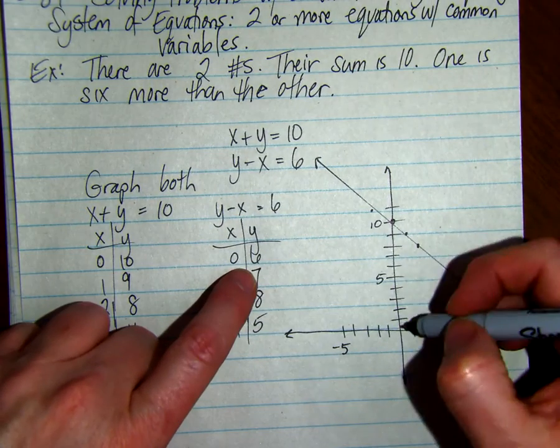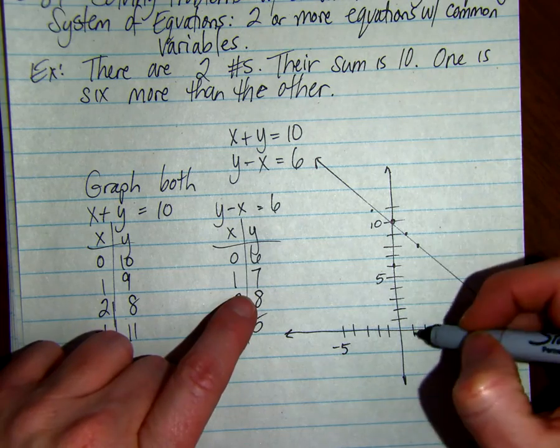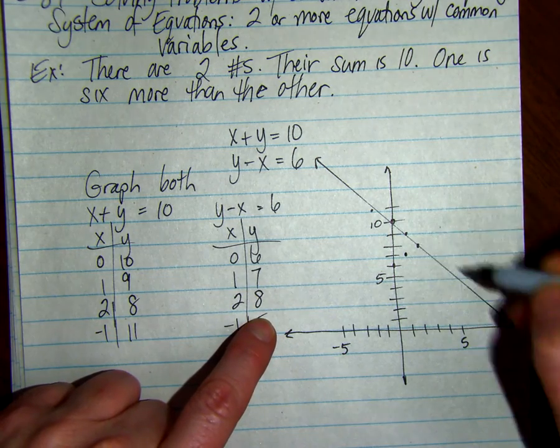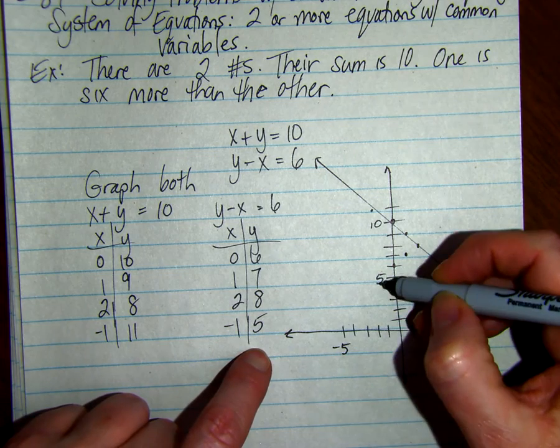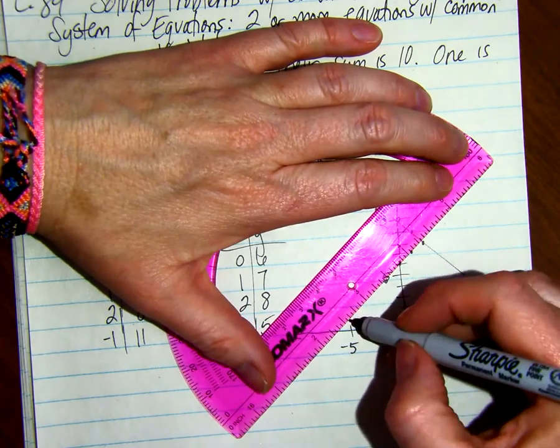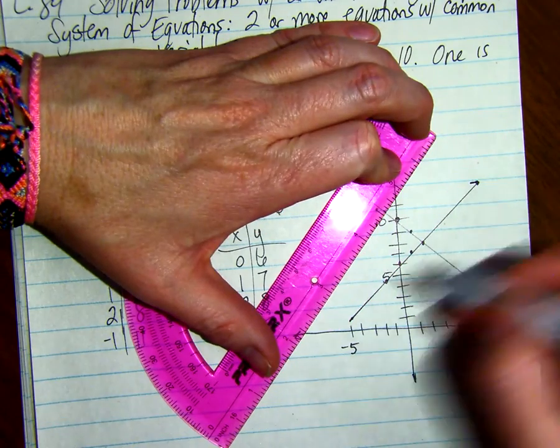The second line is zero, six, one, seven, two, eight, and negative one, five. The solution is the point where they intersect.